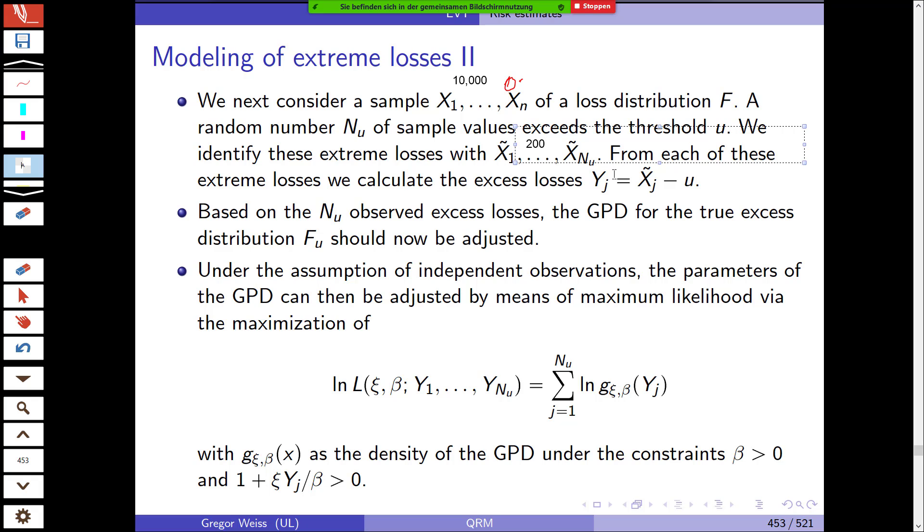Then this goes from X-tilde-1 through X-tilde-200, and from each of these extreme losses we calculate the excess losses. So Y_j is X-tilde-j minus the threshold. For example, we could look at financial losses where the threshold is 1 million euros.